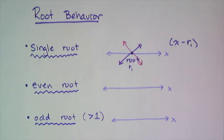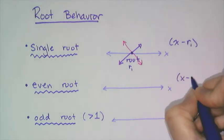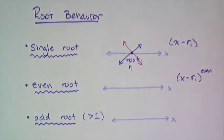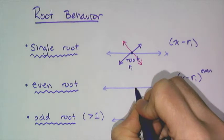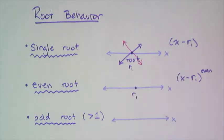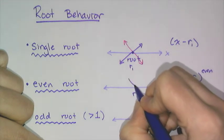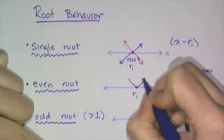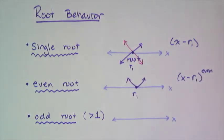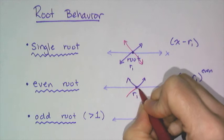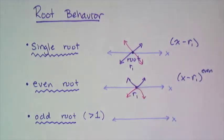If I have even roots — so if I have x minus the root to some even power — then what I'm going to have is a tangency at the root. What I mean by tangent: the function is going to hit the root and then come back up, or it's going to come from the other direction — meaning it's going to be below, come up to the root, and then come back down.